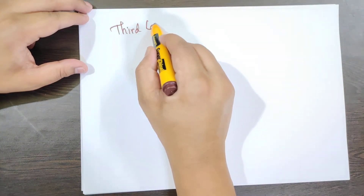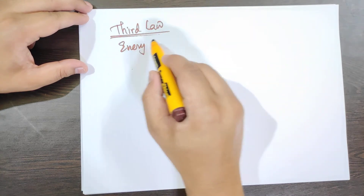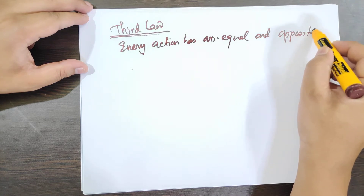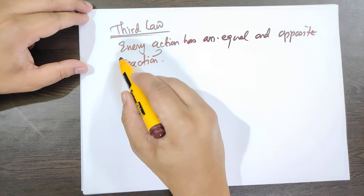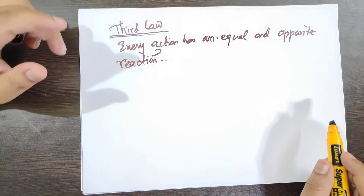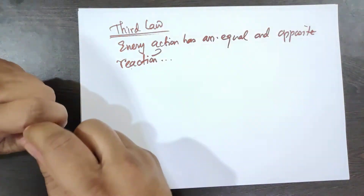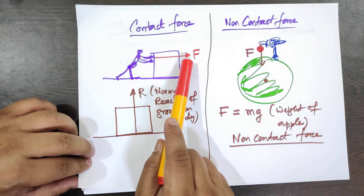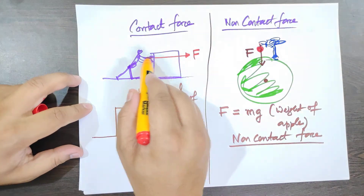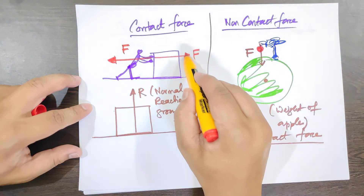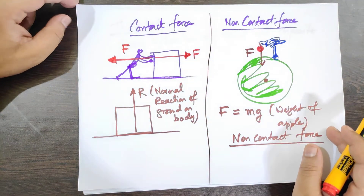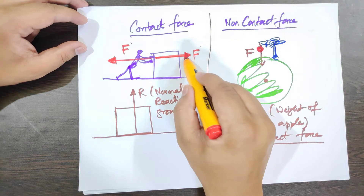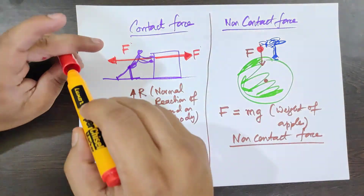Newton's third law says every action has an equal and opposite reaction. In the diagram, the person applies force F on the block; in return, the block applies force F on the person. Their magnitudes are the same but directions are reversed, so vectorially their vector sum is zero.